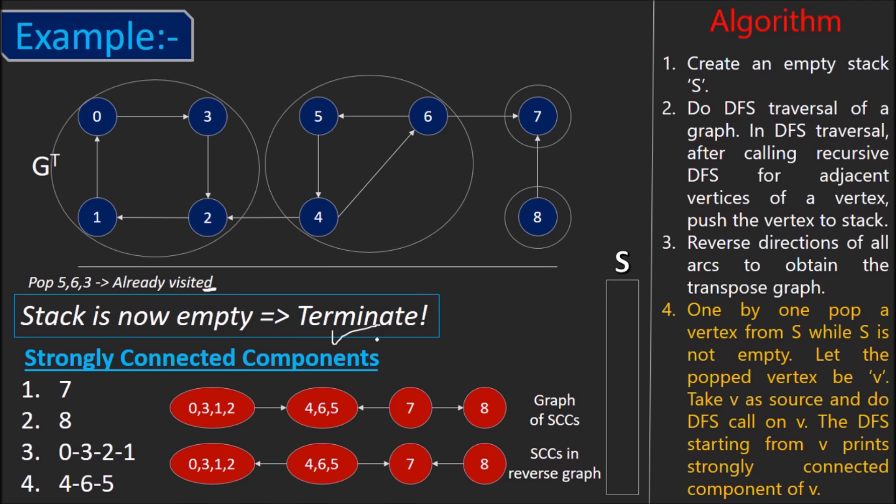The given graph has 4 strongly connected components as listed. We can represent the graph as a graph of SCCs like done here. We just need to see the direction of the edges connecting 2 different strongly connected components.